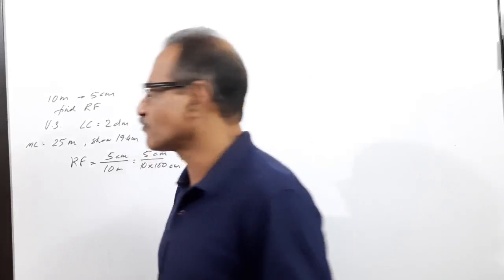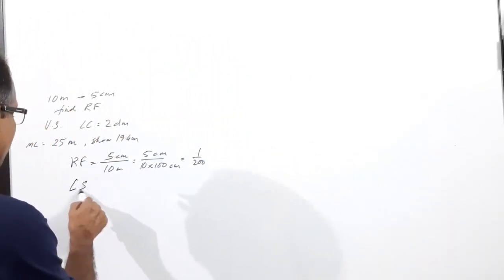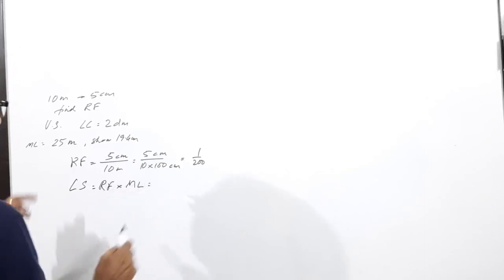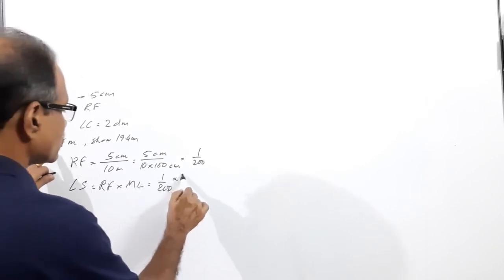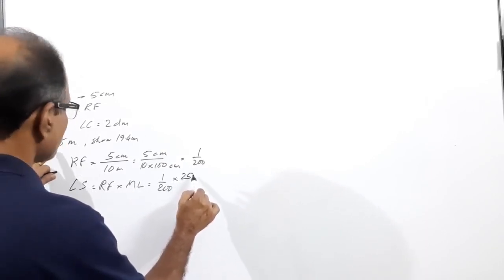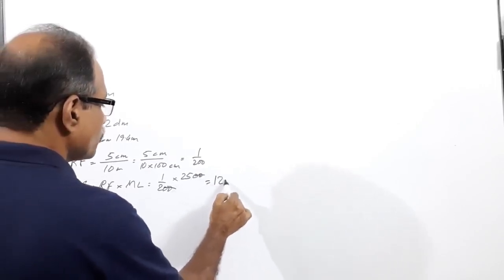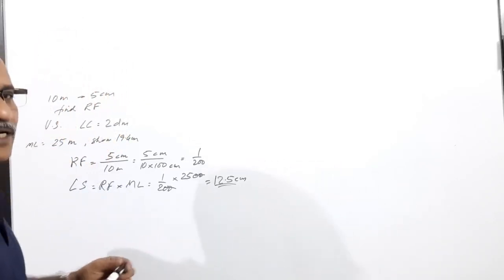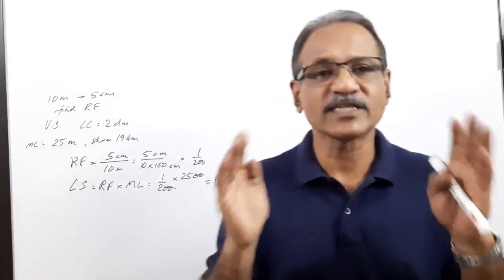Now let's find the length of scale. Length of scale equals RF into maximum length. RF is 1 by 200, maximum length is given as 25 meters. Converting to centimeters, you get 12.5 centimeters. Now you can construct the scale.